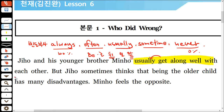each other는 '서로'라는 뜻인데 one another와 바꿔 쓸 수 있어요. 이 표현은 절대 주어 자리에 올 수 없고, 목적어나 전치사의 목적어 자리, 두 군데에만 올 수 있어요. 이어지는 but은 접속사로, however 또는 yet으로 바꿔 쓸 수 있어요.